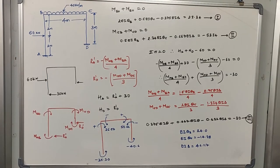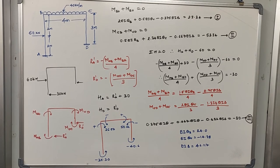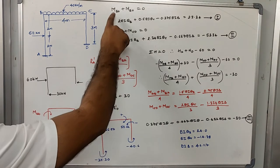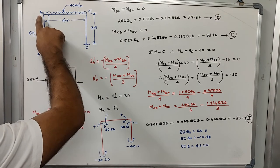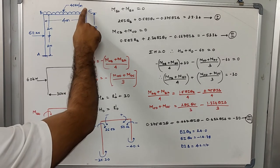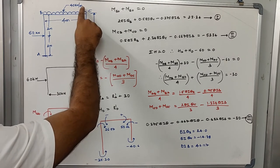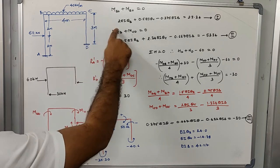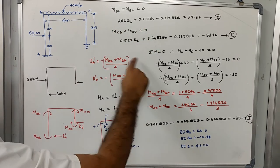With slope deflection equations established, the next step is to write the equilibrium equations to solve for the unknowns: EI·θ_B, EI·θ_C, and EI·Δ. Three equations are needed for these three unknowns. The first two are: summation of moments at B = 0 (i.e., M_BA + M_BC = 0) and summation of moments at C = 0 (i.e., M_CB + M_CD = 0).